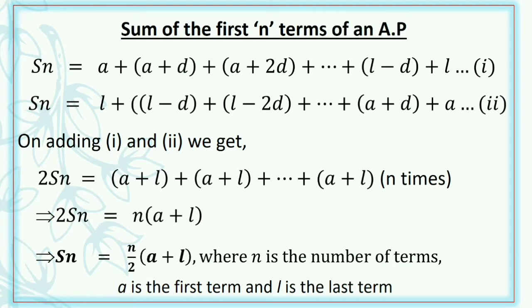Now, in the second step, we just reverse the order of these terms. That means we write the same Sn as l + (l−d) + (l−2d) + ... + (a+d) + a. In fact, both equations show the same Sn but written in the opposite order. Now, by adding equation 1 and equation 2, we get 2Sn. On the right-hand side, the first terms add to a+l, the second terms add to a+l, the third terms add to a+l, and so on, giving a+l repeated n times. That means 2Sn = n(a+l), which implies Sn = (n/2)(a+l).